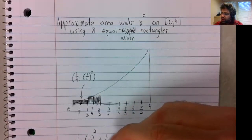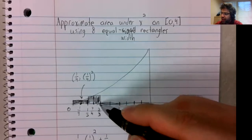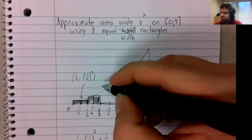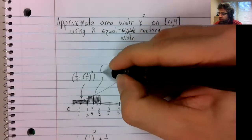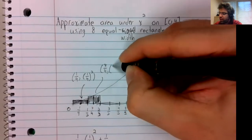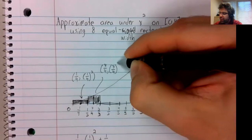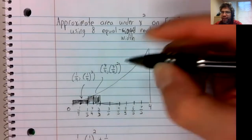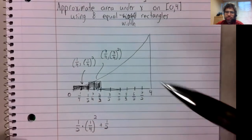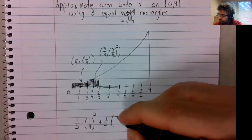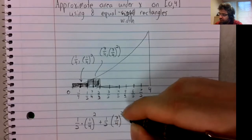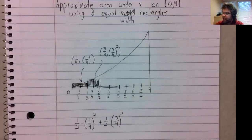The width is one half. We used three fourths, so this is three fourths comma three fourths squared. And this y coordinate is providing the height.